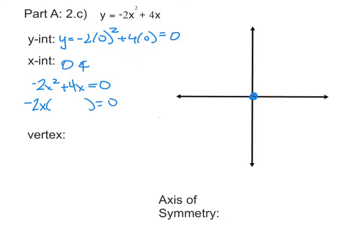When I divide -2x² by -2x, I'm left with x. And when I take that -2x out of +4x, I divide it out. So the x divided by x is gone, and the +4 divided by -2 leaves me with -2.